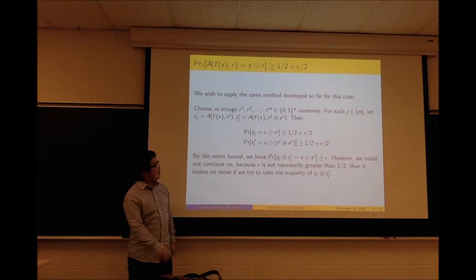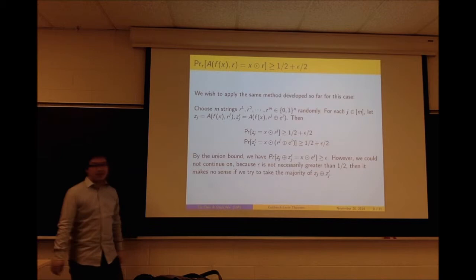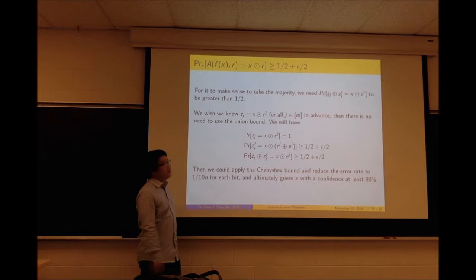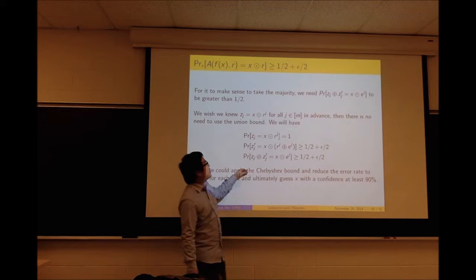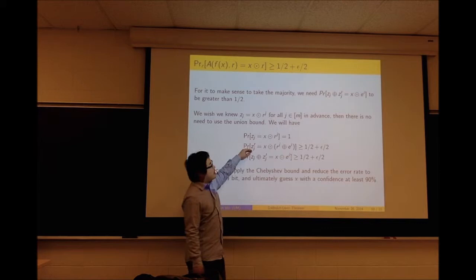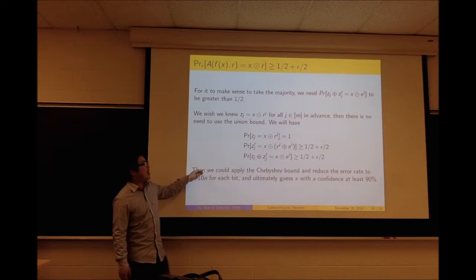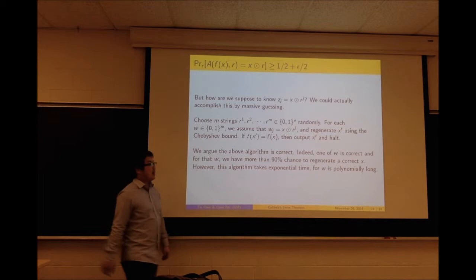By the union bound, the probability that z_j XOR z_j′ equals x dot e_i is greater than ε. However, because ε is not necessarily greater than 1/2, it makes no sense to take the majority. If we would like to take the majority, we need the probability to be greater than 1/2. The simplest way is to assume we know x dot r_j. Then we only need to guess x dot (r_j XOR e_i) by z_j′, so the probability will be greater than 1/2 + ε/2. We could then repeatedly apply Chebyshev and reduce the error rate, ultimately guessing x with 90% confidence. But how can we know x dot r_j?